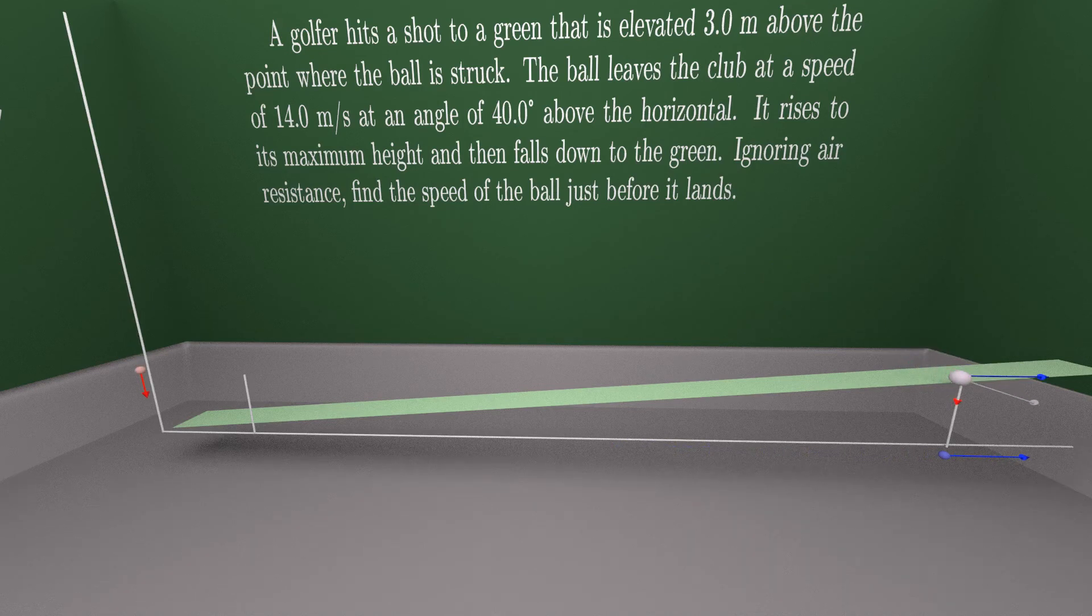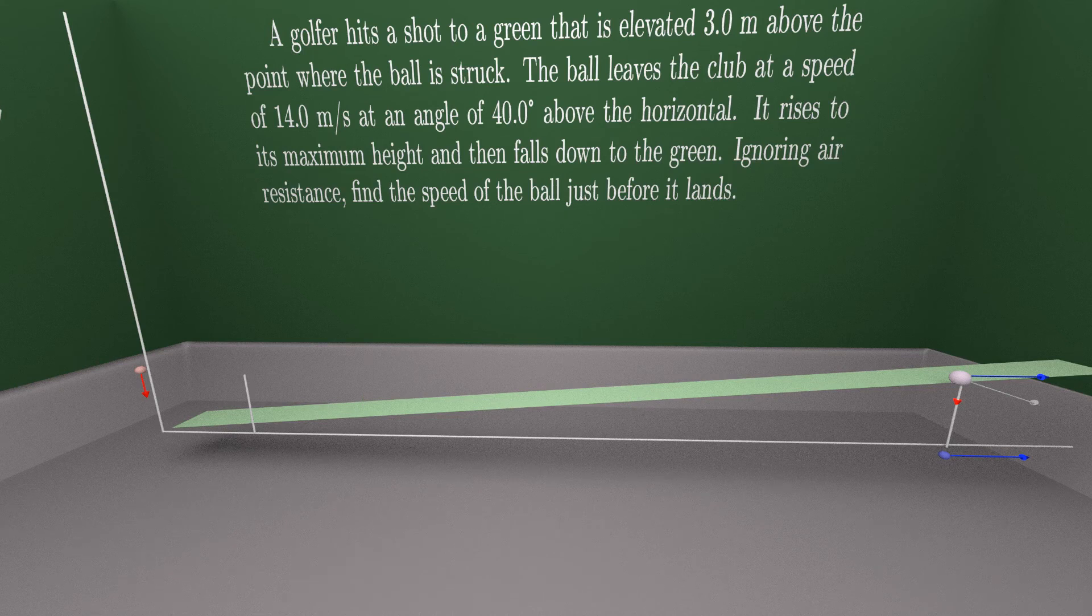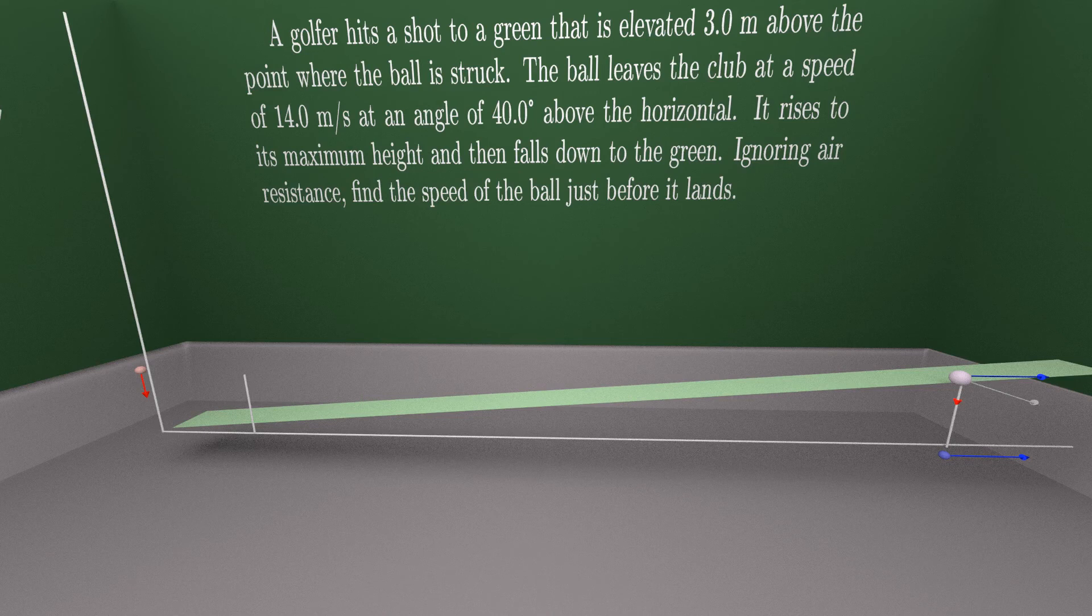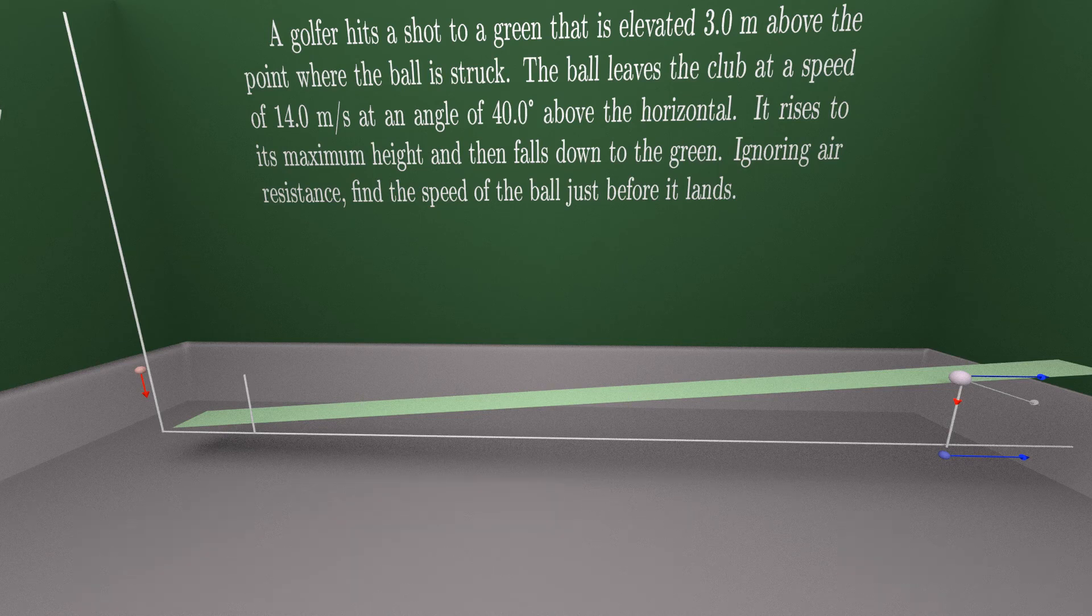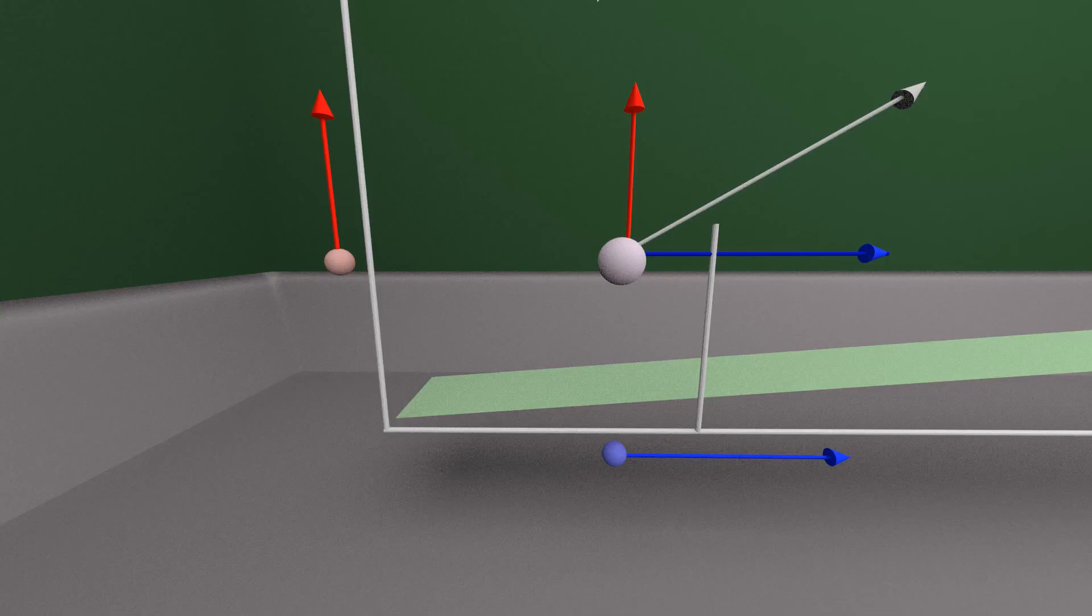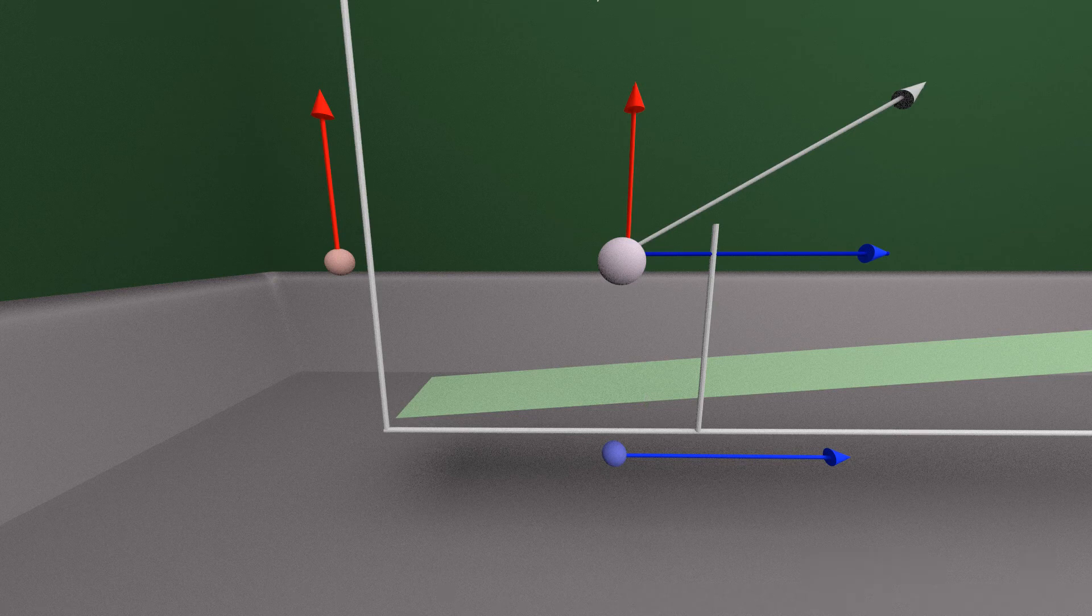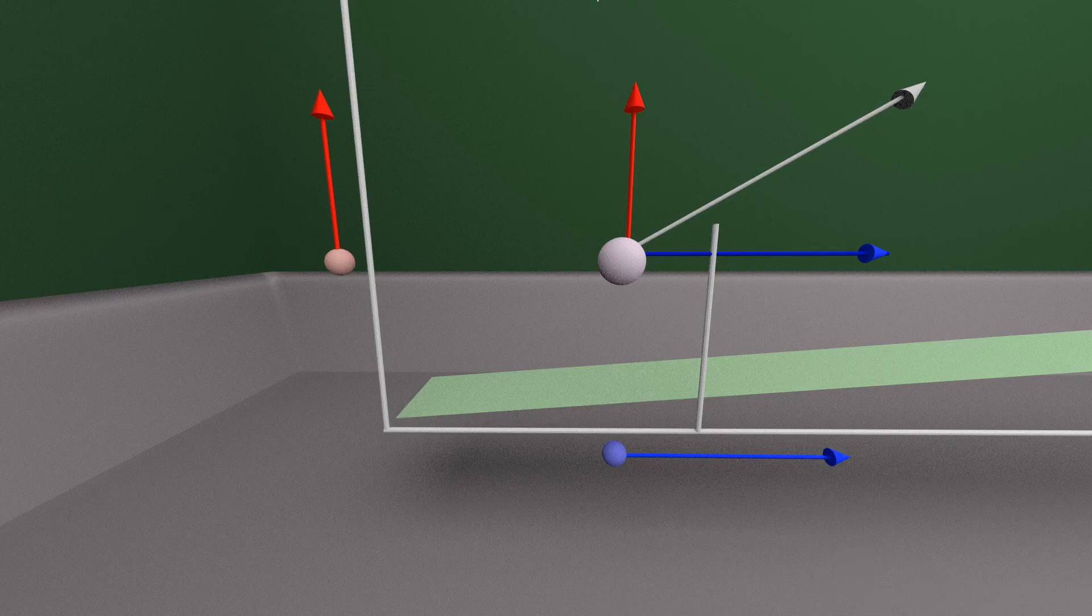We want the speed of the ball in this point. So the goal is to find the component of the velocity when the ball is here. When we find the values for these components, then it's trivial to calculate speed from them. The motion along y-axis is the motion under the influence of gravitational acceleration g. We will do this later. Right now, let's talk about the motion along x-axis.